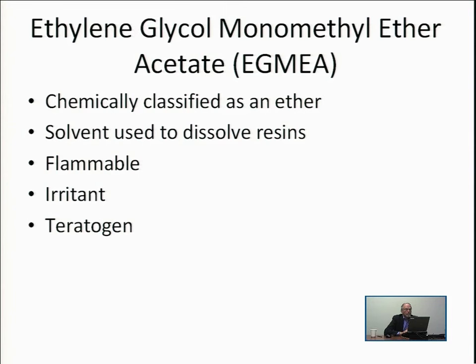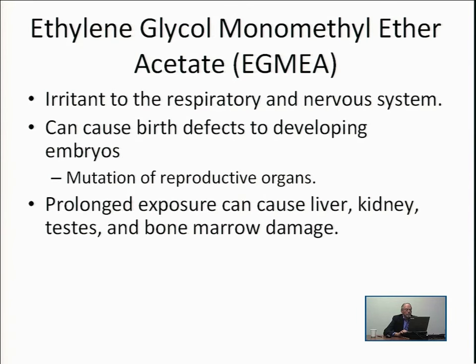Ethylene glycol monomethyl ether acetate is an ether used to dissolve organics, particularly resins. It can be classified as flammable, an irritant, and a teratogen. It is a dangerous material requiring careful handling. It can cause respiratory and nervous system damage. Since it is a teratogen, it can cause birth defects, and can cause liver, kidney, testicle, and bone marrow damage.